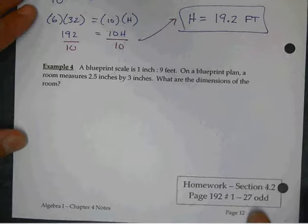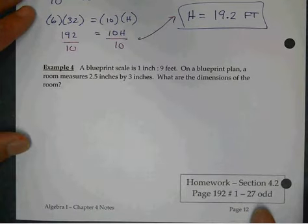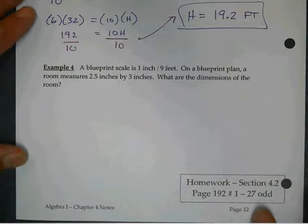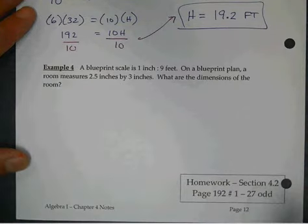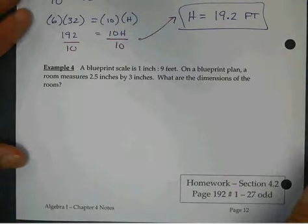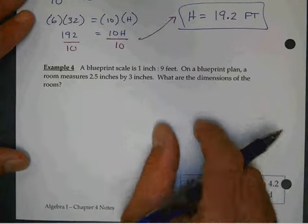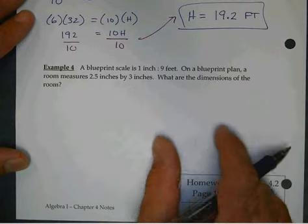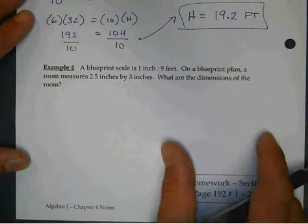A blueprint scale is one inch to nine feet. Do you have any idea what they're talking about? So on a blueprint, if you were to measure a blueprint, and for every inch on the blueprint, every inch represents nine feet. So if you measured a blueprint, it was two inches, then that's how many feet?